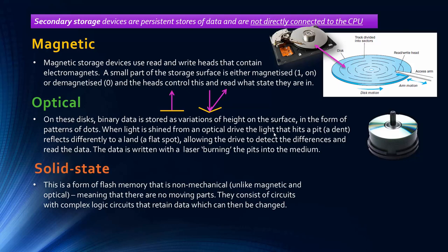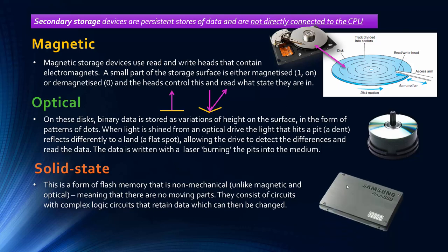The third technology is solid-state, which is a form of flash memory but non-mechanical. Unlike magnetic and optical disks, there are no moving parts in solid-state. Solid-state is a lot more complicated — they're really just circuits with logic circuits that retain data which you can change. This is what an SSD, a solid-state drive, looks like.